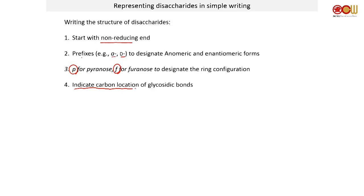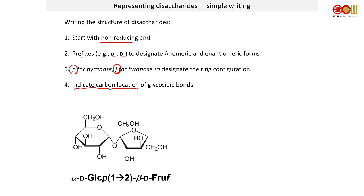We also indicate the bond location between which two carbons. For example, here we have alpha-D, telling you it's an alpha anomer and a D sugar. This is glucose in its pyranose form, and the linkage is 1 for the glucose — C1 — to C2 of the second sugar, which is beta-D-fructose in the furanose form.